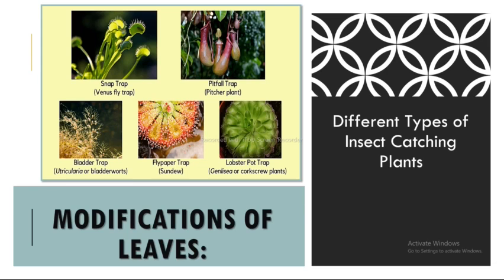The next plant is the pitfall trap, also known as the pitcher plant. Pitcher plants produce pitfall traps derived from leaves to attract, capture, retain, kill, and digest animal prey — usually insects — enabling them to survive in nutrient-poor environments. The next plant is the bladder trap, also known as Utricularia or bladderwort. Bladderworts trap small organisms in tiny bladders which have a trap door triggered by hairs. When prey contacts the hairs, the door opens in a millisecond, sucking the animal in and closing in about 2.5 milliseconds.